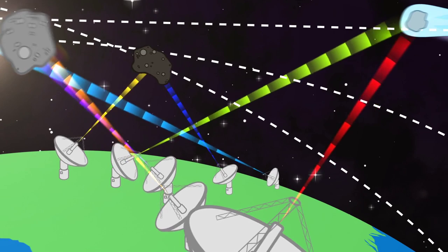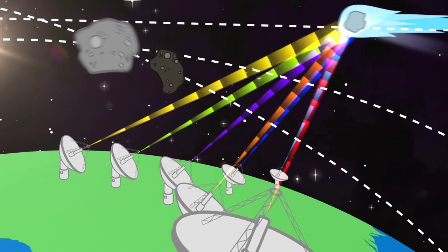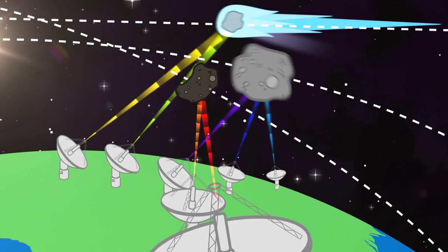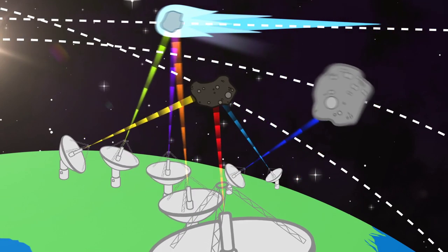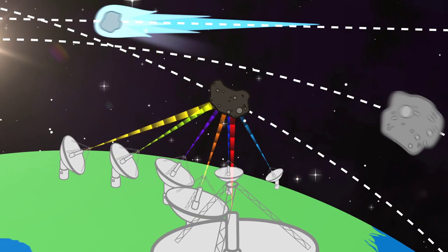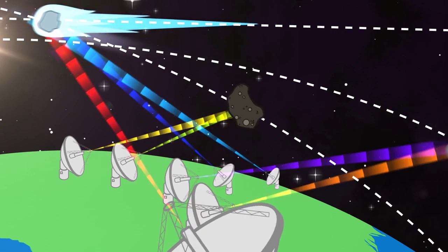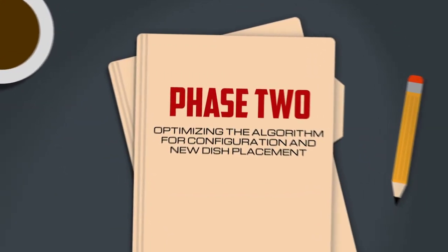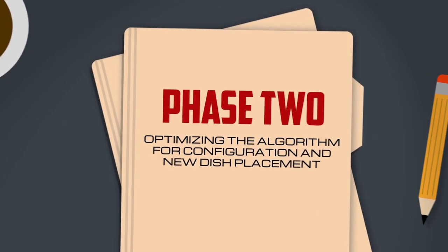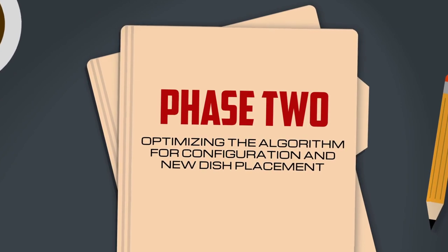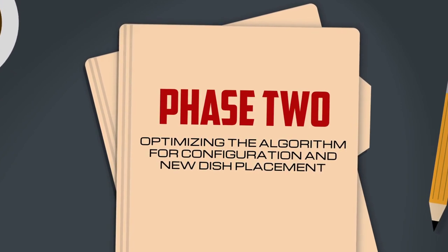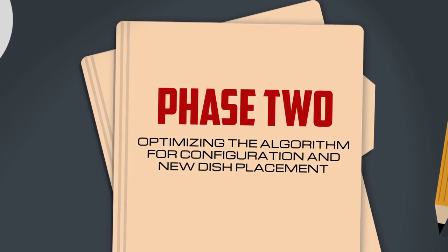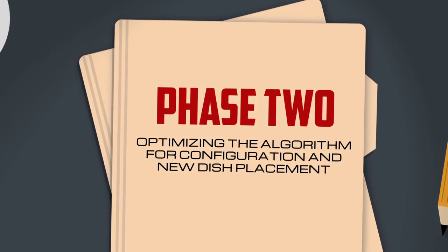With your help, we'll find the optimizing algorithm that selects the best set of subarrays, allowing us to track one or more objects simultaneously. If successful, NASA envisions a second phase of this challenge, focused on optimizing the algorithm for configuration and new dish placement.